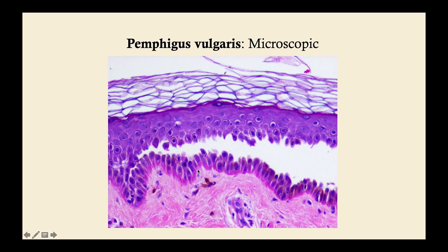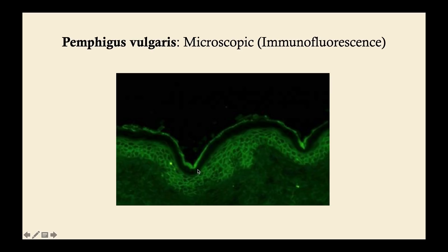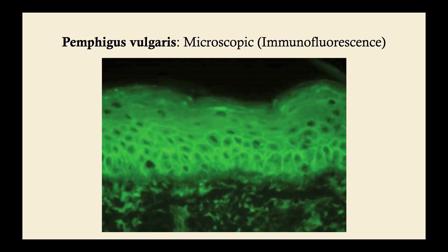On immunofluorescence, a positive stain appears as a lighter neon green color whereas negative areas are a darker green. Notice the very thick layer corresponding with keratinocytes, which yields this net-like fishnetting pattern. When we get to bullous pemphigoid, it will be a very different pattern — I'll show you a picture of both together so you can appreciate the difference. Here you can appreciate that broad fishnet-like band.